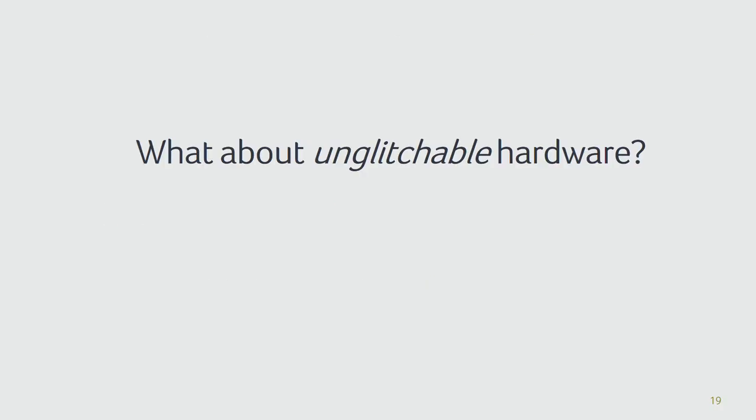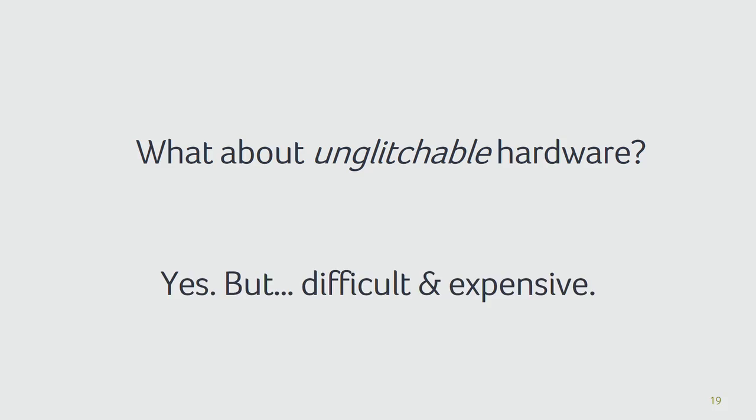This quickly leads to the question: why not use unglitchable hardware? It would be possible — the smart card industry already solves many of the problems that richer systems like system-on-chips have. But system-on-chips are much bigger, run much more functionality, and run much faster. Implementing the same type of hardware countermeasures used in smart cards in a system-on-chip is very difficult and very pricey. This is one reason we don't see too many of these devices in the field yet.